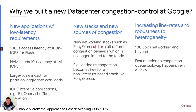We have new stacks and new sources of congestion. For example, Pony Express, a stack we published at SOSP 2019, exhibits congestion behavior that is no longer limited to the fabric. It is designed for CPU efficiency. We also have increasing line rates of 100 Gbps and beyond, meaning we need to react to congestion very quickly because queues can build up rapidly. Additionally, congestion control needs to be robust to heterogeneity, and tying congestion control to switch internals has proved a maintenance burden.